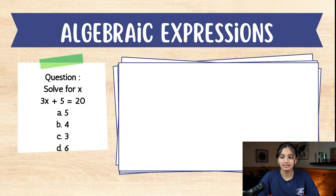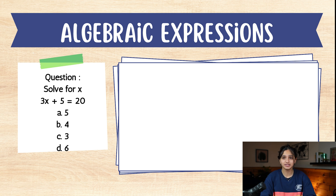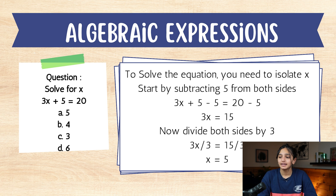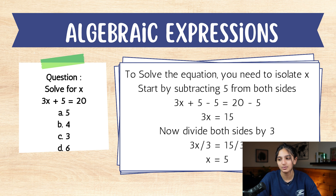Solve for x: 3x + 5 = 20. A. 5. B. 4. C. 3. D. 6. Take a minute to pause the video and see which answer you think is correct. If you said A, 5, you are correct. To solve the equation, you need to isolate x. Start by subtracting 5 from both sides: 3x + 5 - 5 = 20 - 5, giving 3x = 15. Now divide both sides by 3: x = 5.